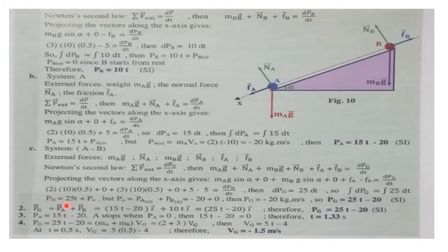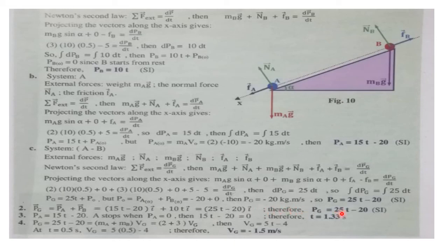In part 2, we write the expression of Pg as a vector. We know that the linear momentum of a system of particles equals the summation of the linear momenta of all particles. So, Pg vector equals PA vector plus PB vector equals (15t minus 20)i plus (10t)i, which gives Pg vector equals (25t minus 20)i. Therefore, the algebraic value of Pg equals 25t minus 20, in SI units.